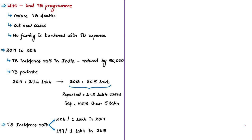The news article compares TB data for 2017 and 2018. The tuberculosis incidence rate in India decreased by almost 50,000 patients over one year. In 2017, India had 27.4 lakh TB patients; in 2018, this came down to 26.9 lakh. However, of the 26.9 lakh, only about 21.5 lakh cases were reported — a gap of more than 5 lakh. The TB incidence rate (cases per 1 lakh population) fell from 204 in 2017 to 199 in 2018.